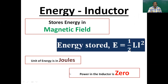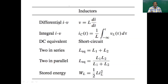The energy stored in an inductor is given by W = ½Li², with units of joules. An inductor stores energy in the form of a magnetic field — it does not dissipate energy as heat the way a resistor does. Also important to note: the power in an inductor is zero. In future videos on AC circuits, we will discuss why the power in an inductor equals zero.